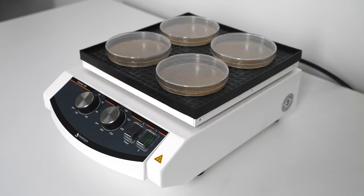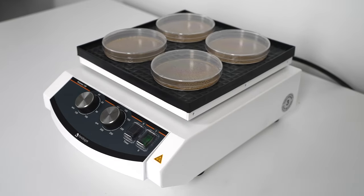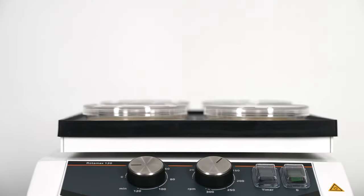The Rotomax 120 shakes at speeds between 20 to 300 rpm and has a maximum orbit of 20 millimeters. The Rotomax 120 has two modes: a continuous mode for extended use and a timer mode for any preset times your protocol or SOP requires.